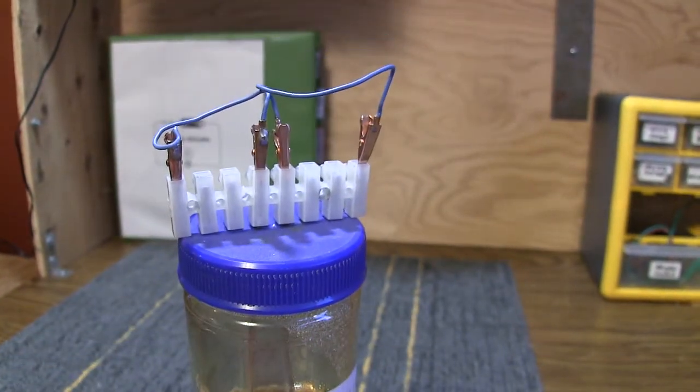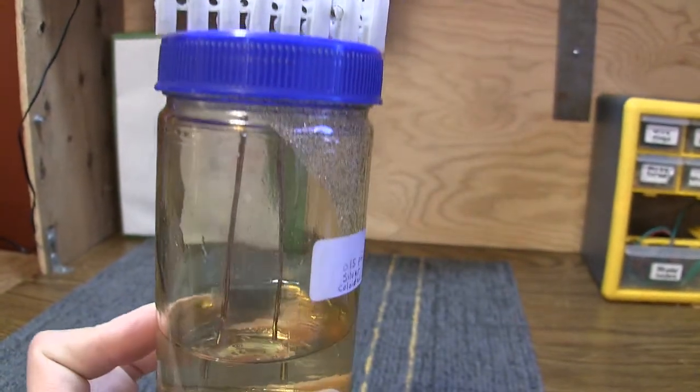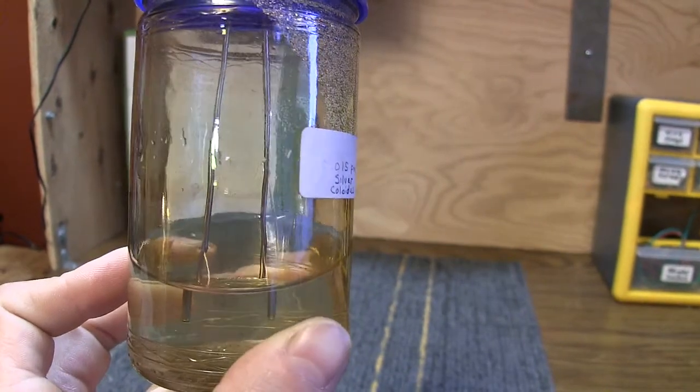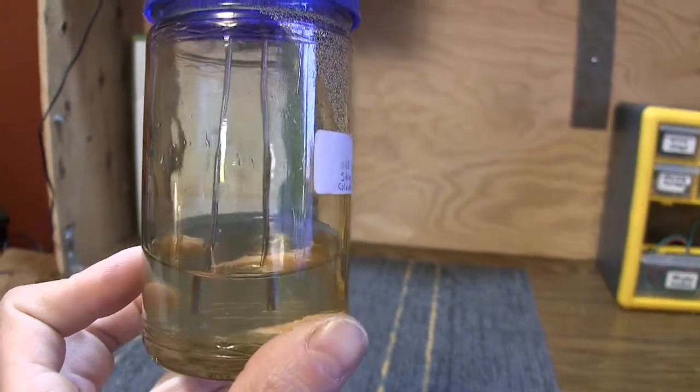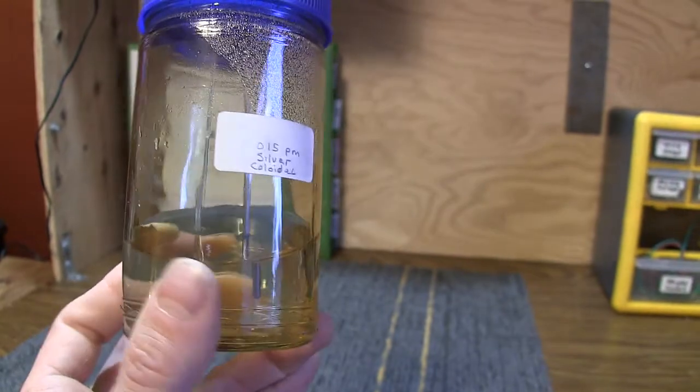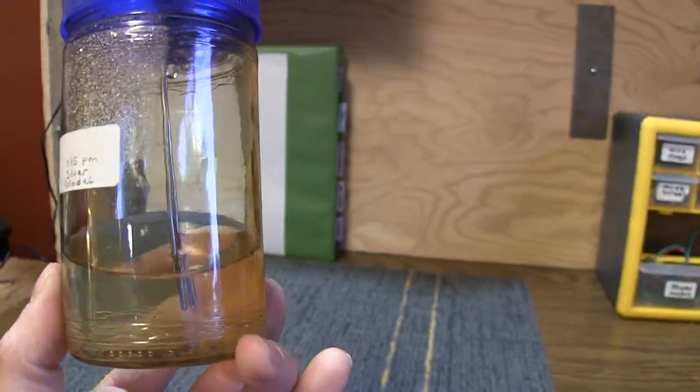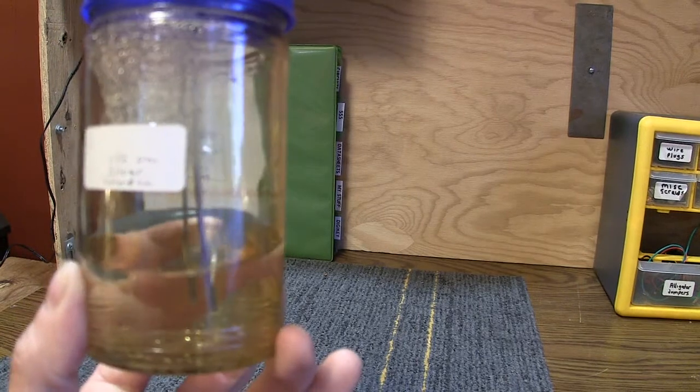What I did is I actually left the silver electrodes in the jar and I was astonished to see that after a year that none of the silver has fallen out of solution. It's truly incredible.